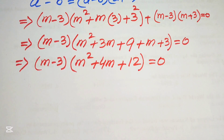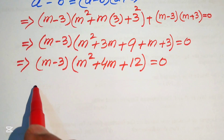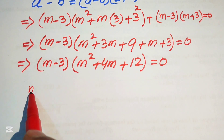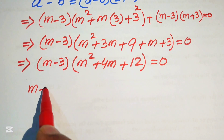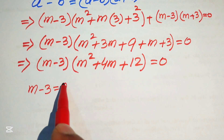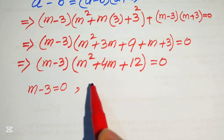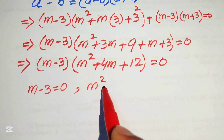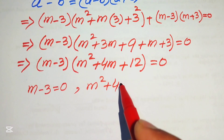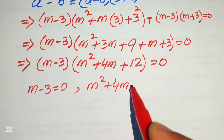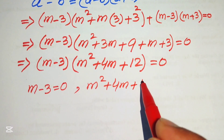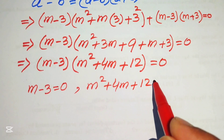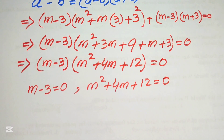Now we break this equation into two cases. The first case is m minus 3 equals to 0, and the second case is m squared plus 4m plus 12 equals to 0.